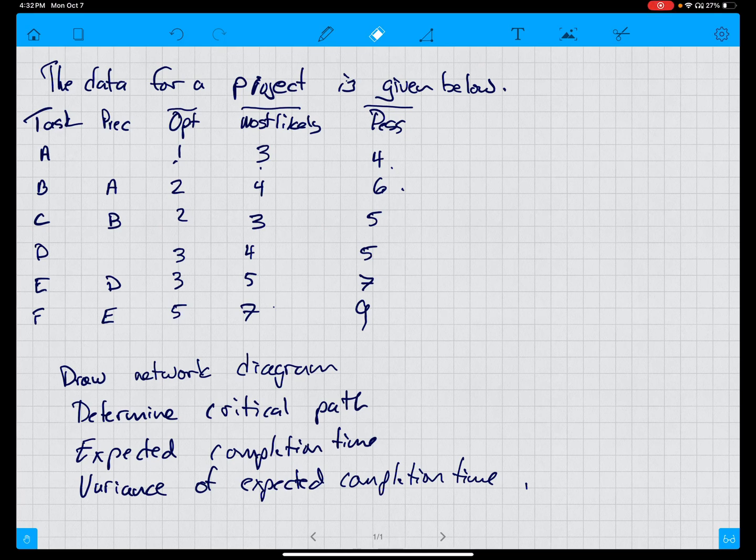In this video, we're going to take a look at project management, but in this case, we're going to look at it from an uncertainty perspective. What's the expectation given we have optimistic, most likely, and pessimistic estimates of task completion?